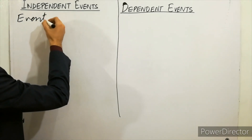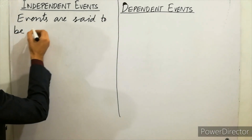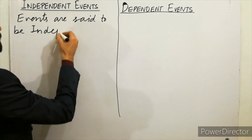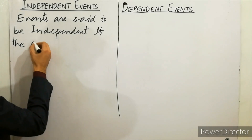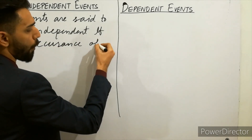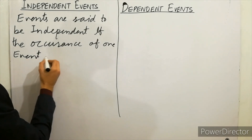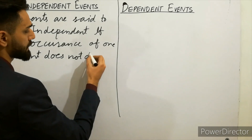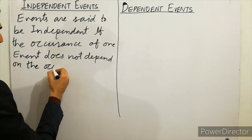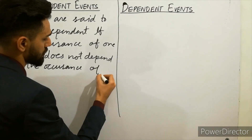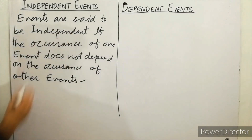Events are said to be independent events if the occurrence of one event does not depend on the occurrence of other events. These are called independent events.